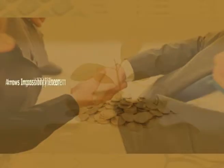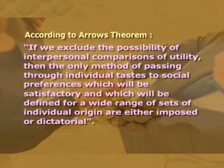All these five conditions reflect Arrow's value judgment and seem to be a quite reasonable set of conditions for making social choices in a free democratic society. Thus Arrow has revealed that it is impossible to make a social welfare function on the basis of individual values that satisfies all the above conditions. After discussing social as well as individual value, Arrow proved his famous impossibility theorem. According to this theorem, if we exclude the possibility of interpersonal comparisons of utility, then the only methods of passing from individual taste to social preferences which will be satisfactory and defined for a wide range of sets of individual orderings are either imposed or dictatorial. Thus the only way to reach social choice is through voting, that is the majority rule.